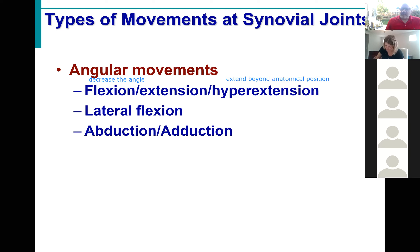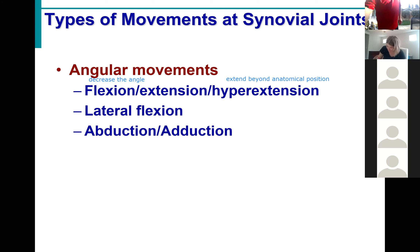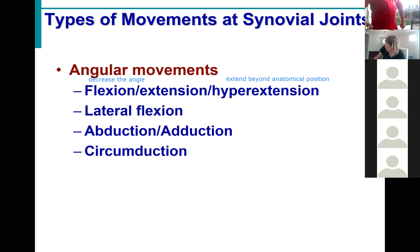If abduction is away from the midline, then adduction is movement towards the midline. When you put those four motions together — flex, adduct, extend, abduct, flex, adduct, extend, abduct — what type of motion is that? It's a circumduction. When you put flexion, extension, adduction, and abduction together you get that circumduction — that cone-shaped motion of the body.